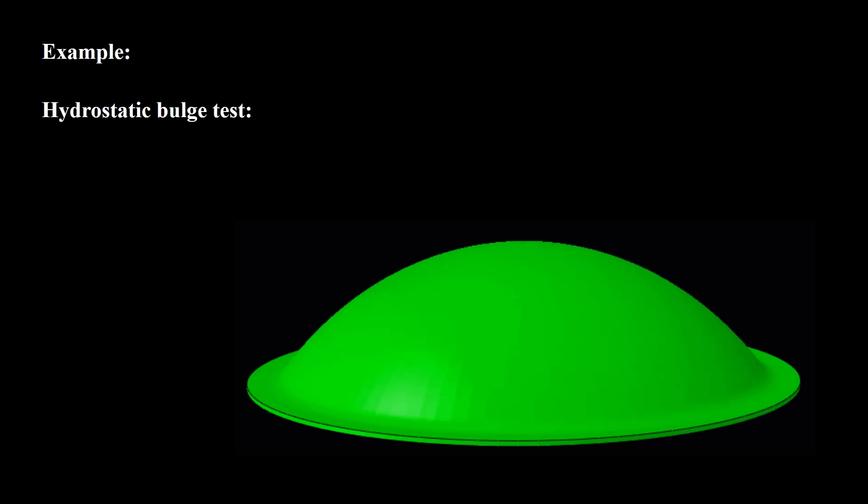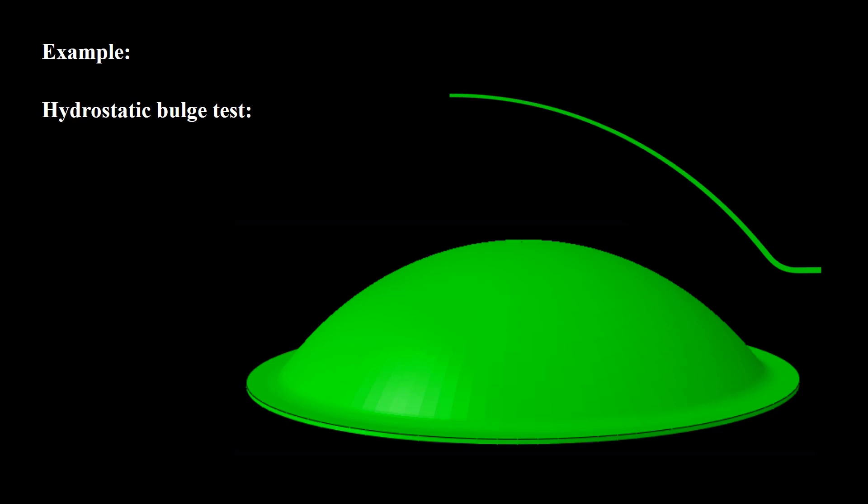Can we model the hydrostatic bulge test by structural elements? Considering the cross-section of the sheet in this process — if the two radii and also the span of the die are at least ten times bigger than the thickness, this process can be modeled by shell elements. If the thickness is small enough that bending of the cross-section is negligible, we can even use membrane elements. If our problem does not satisfy the requisites of any structural element, we should choose one of the solid elements.